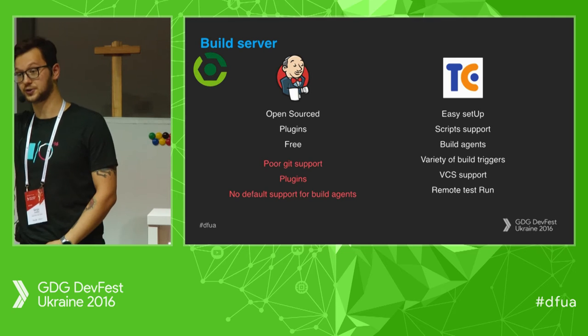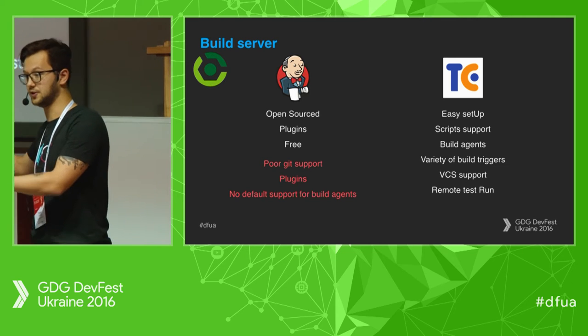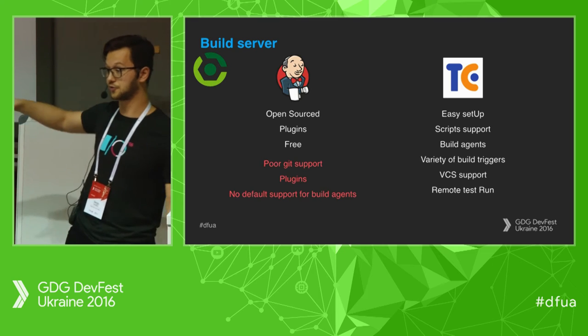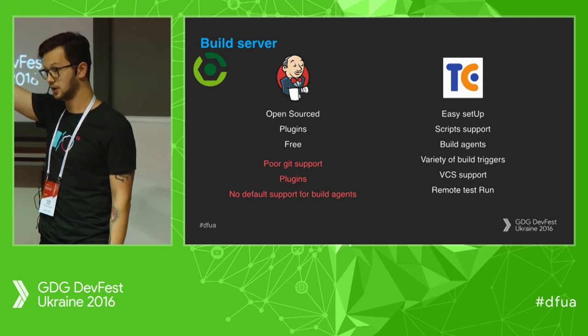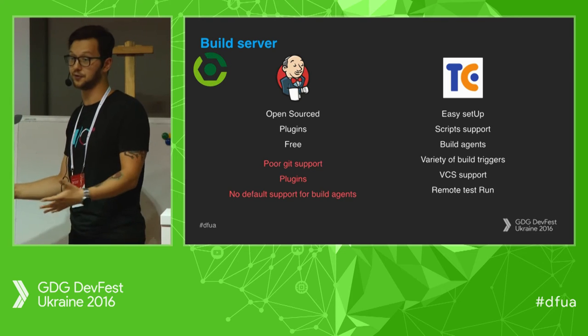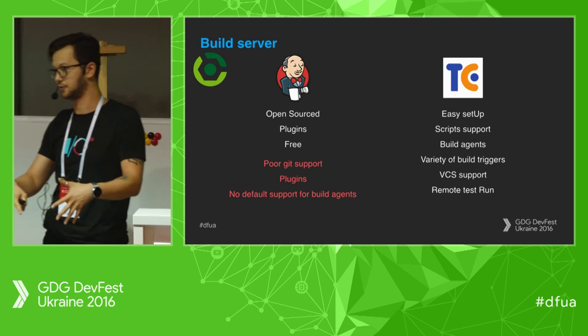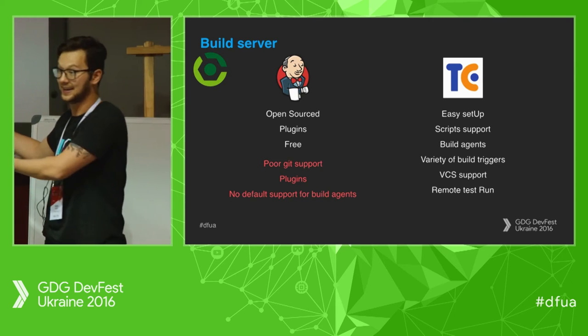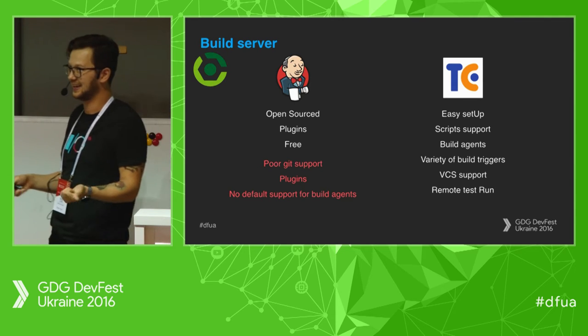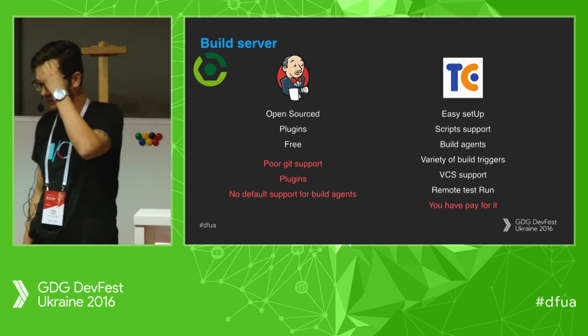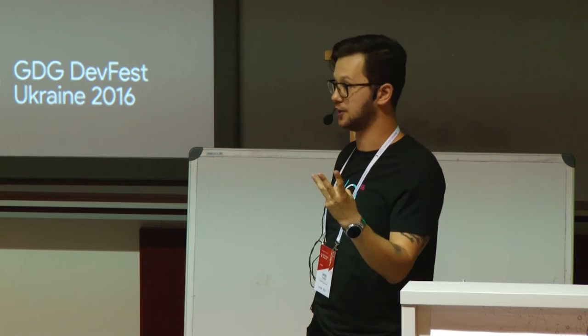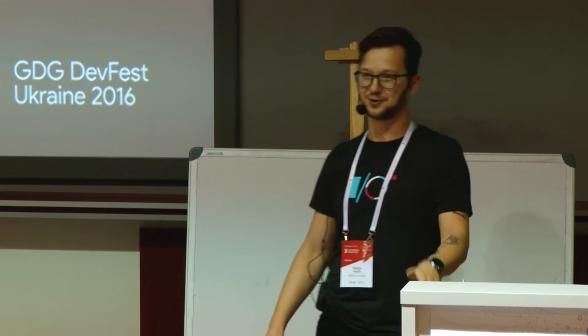TeamCity has remote test run and remote building — a cool feature. If you're using IntelliJ IDEA you can install the TeamCity plugin, set up your server address and login, and build from Android Studio running tests on the actual build machine, not locally. And yes, you have to pay — but there's a free version: 20 build configurations and three agents for free. For those using Travis, that's pretty much equivalent.